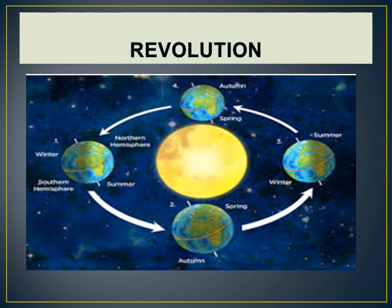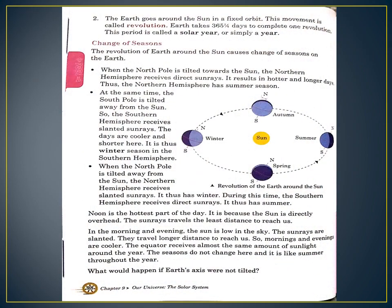Underline this statement: noon is the hottest part of the day. It is because the sun is directly overhead during noon, and the sun rays travel the least distance to reach us. In the morning and evening the sun is low in the sky — the rays are slanted and travel a longer distance, so mornings and evenings are cooler. The equator receives almost the same amount of sunlight throughout the year, so seasons do not change there — it is like summer throughout the year.